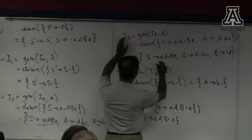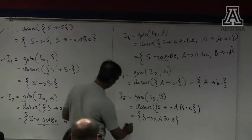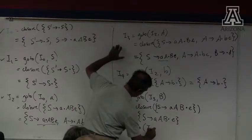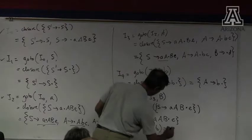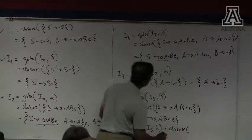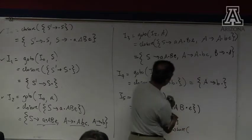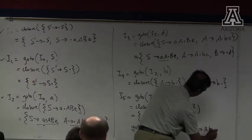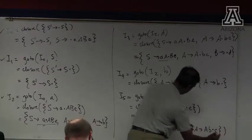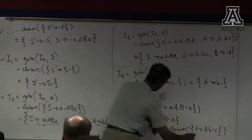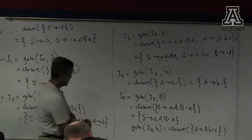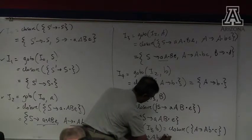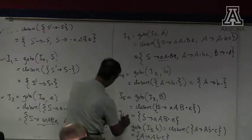That's taken care of this item. I have a transition out on little b. Go-to from I3 on little b is equal to the closure of items where little b appears to the right of the dot: A goes to A, little b dot C. There are no non-terminals to the right of the dot, so the closure doesn't add anything. A goes to A, B dot little c — that's a new state, let's call it I6.